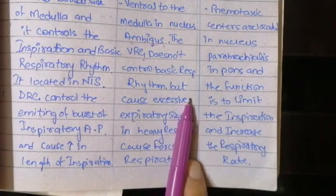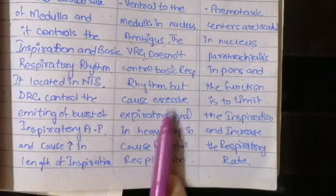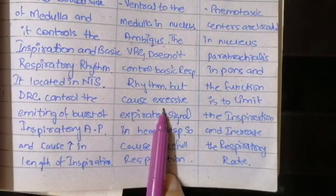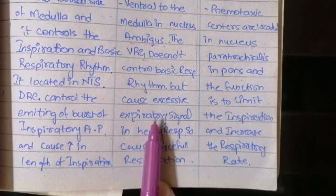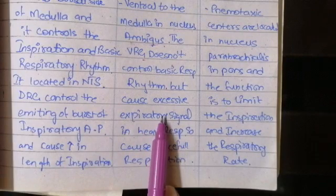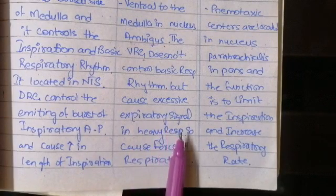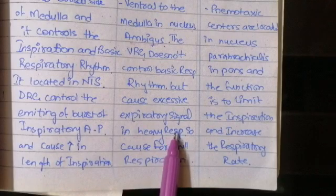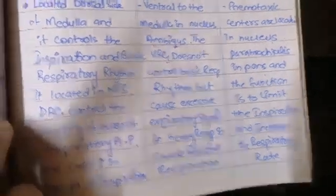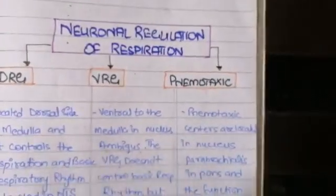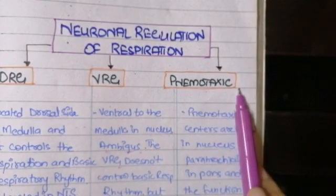The ventral respiratory group of neurons is responsible for controlling the rate of expiration through controlling the muscles of expiration. When there are excessive expiratory signals, it causes a burst of excessive expiration, which occurs during heavy respiration or heavy exercise. This group of neurons does not control quiet respiration.